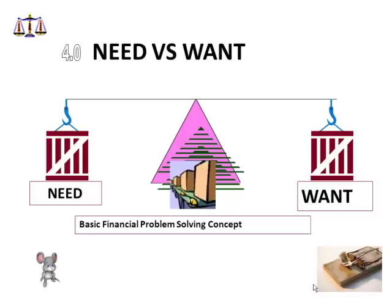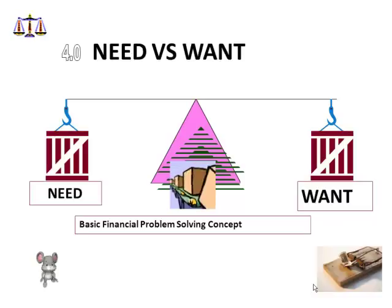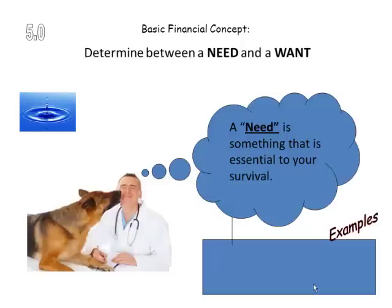In doing that, we need to understand a simple financial problem-solving concept, and that is understanding needs versus wants. When we deal with needs versus wants, it's like a scale where we weigh what we need and what we want. A need is something that is essential to your survival. Basic needs: water, food, shelter, clothing — those are examples of basic needs that we all have to have.